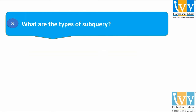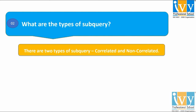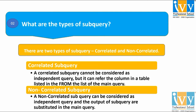The second question asks: what are the different types of subqueries? There are mainly two types of subqueries — one is correlated and two is not correlated. A correlated subquery cannot be considered as an independent query, but it can refer to the column in a table listed in the FROM clause of the main query. Whereas a not correlated subquery can be considered as an independent query and the output of the subquery is substituted in the main query.